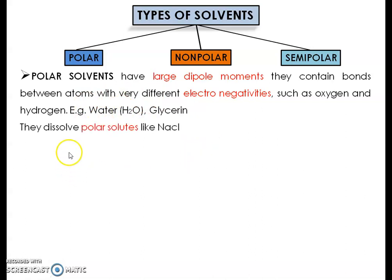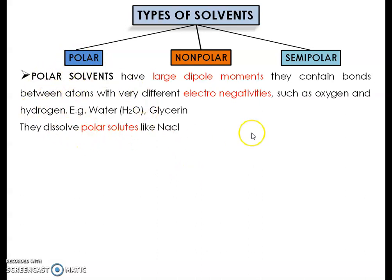Polar solvents dissolve polar solutes more readily, because polar solutes like NaCl dissociate to form ions — NaCl forms Na⁺ and Cl⁻ ions when added to water. So polar solutes more readily dissolve in polar solvents. There are three types of mechanisms by which polar solvents make solubility happen, and we will discuss these one by one.